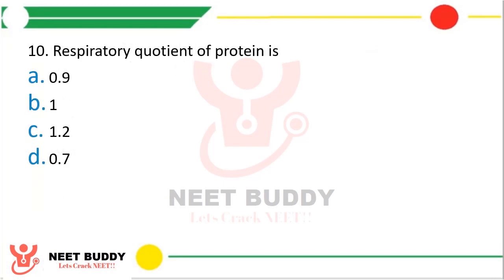Question 10: Respiratory quotient of protein is — option A 0.9, option B 1, option C 1.2, or option D 0.7. The correct answer is option A, 0.9. The respiratory quotient (RQ) is the volume of CO₂ evolved divided by the volume of O₂ consumed. For glucose it is 1, and for proteins it is 0.9.